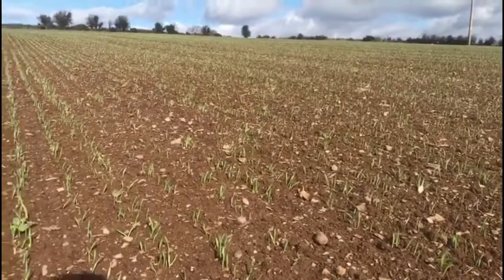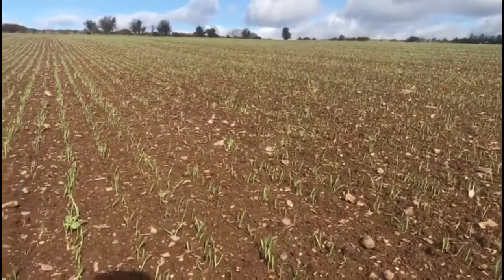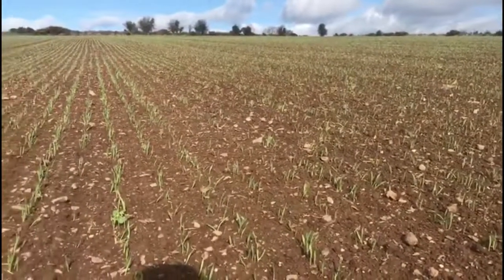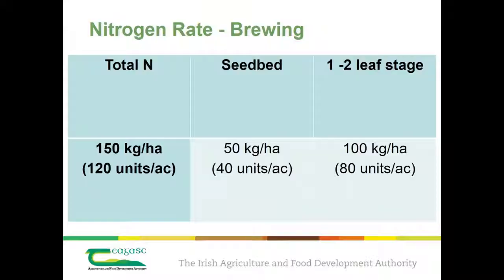The optimum rate of nitrogen to apply to a Spring Malt and Barley crop that has been drilled on a long-term tillage site can be seen on the slide. For brewing barley, apply a total of 150 kilos per hectare or 120 units per acre, with 100 kilos or 80 units applied at the one to two leaf stage.